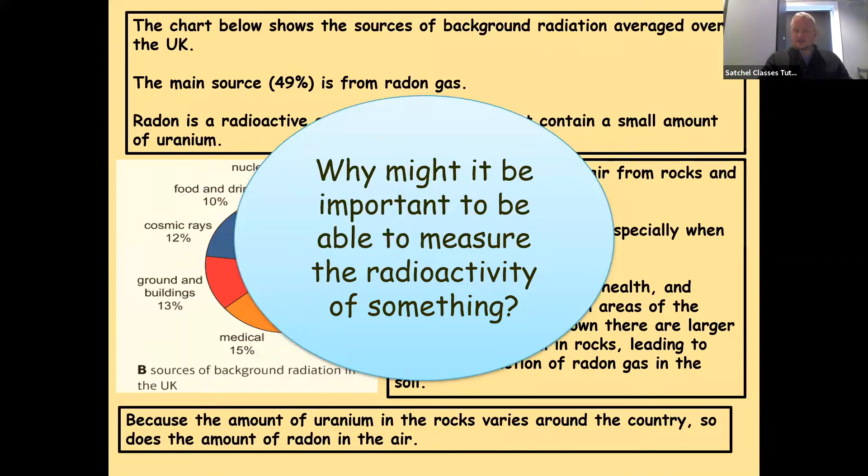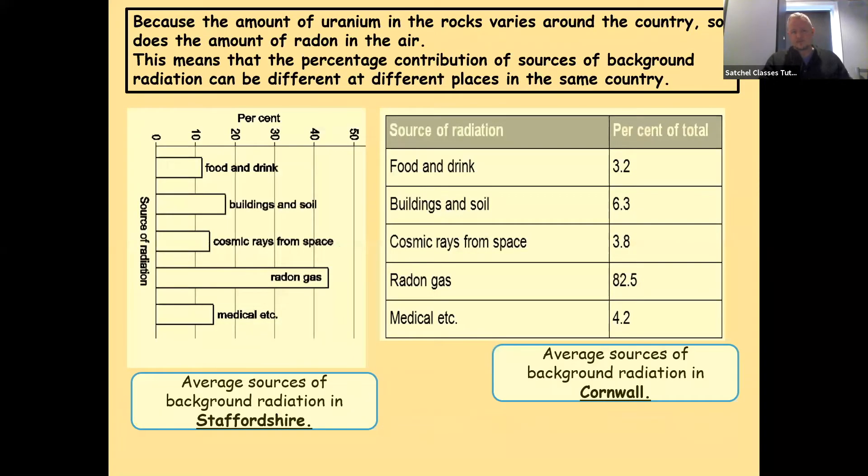So why is it important to be able to measure the radioactivity of something? Because the amount of uranium in rocks varies around the country, so does the amount of radon in the air. This means that the percentage contribution of sources of background radiation can be different at different places in the same country.